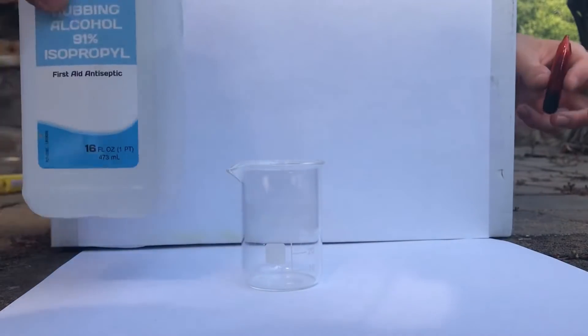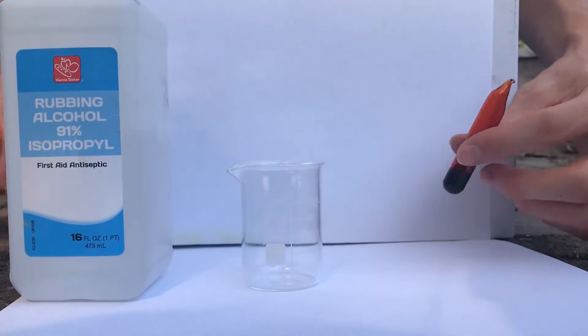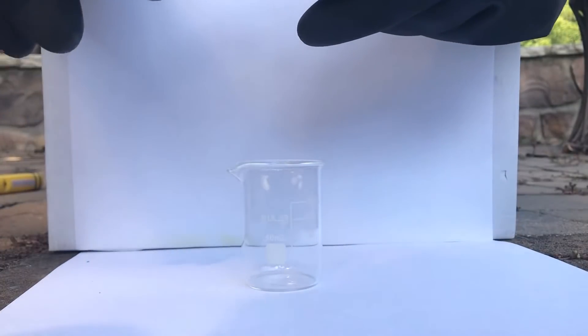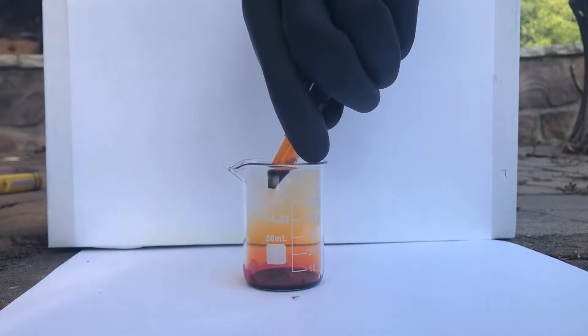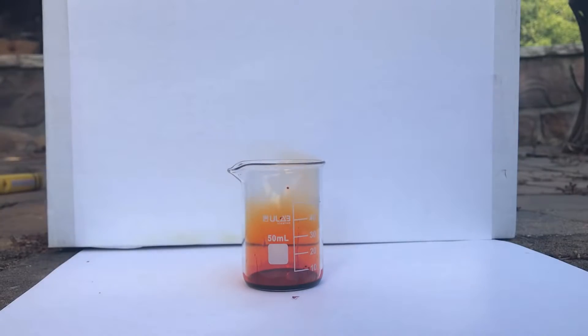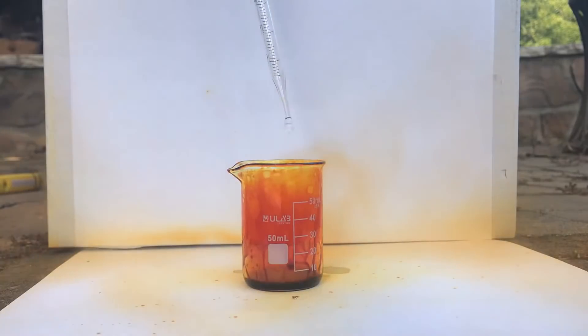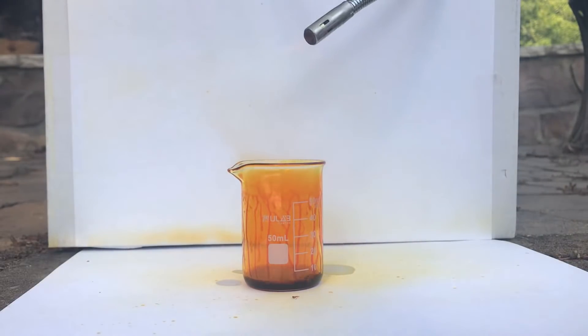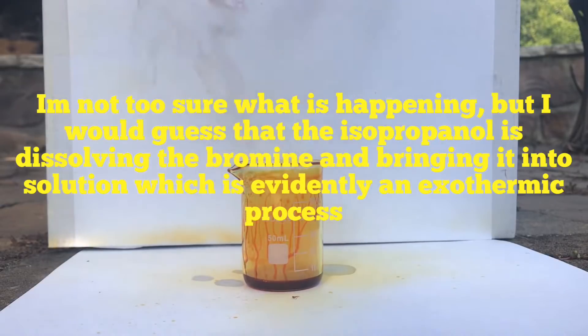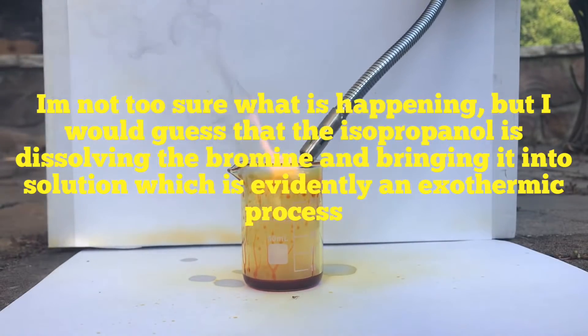Alright, now we're going to be reacting isopropyl alcohol with bromine to see if it even reacts. Alright, so bromine's going to go in first as we're dropping it in. Okay. Whoa. It actually dissolved the bromine. Watch this.